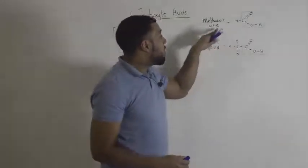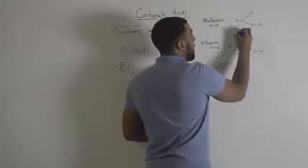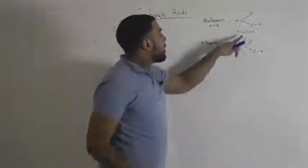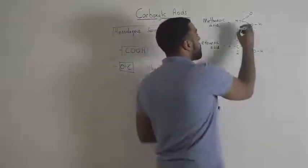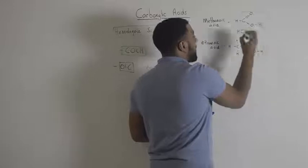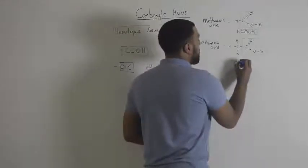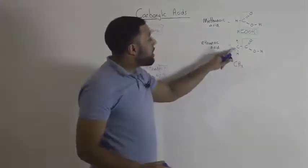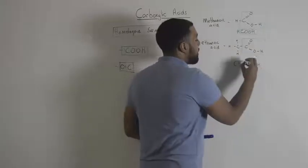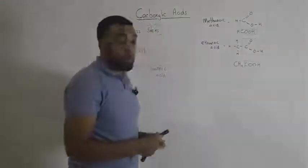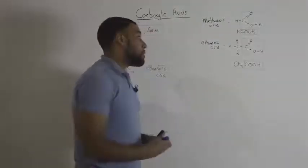The formula for methanoic acid is HCOOH. If you are given the formula you should be able to recognize that COOH group. For ethanoic acid the formula would be CH3COOH. Again we have that COOH group.